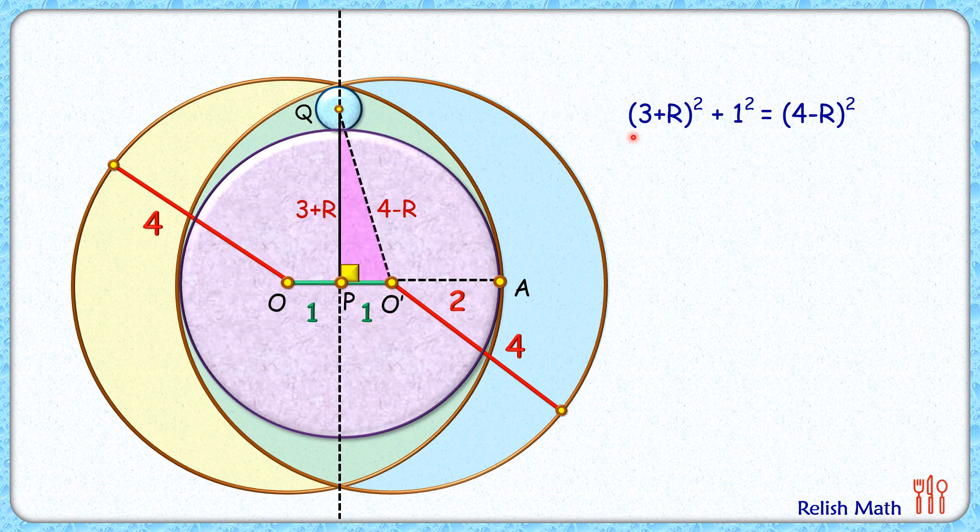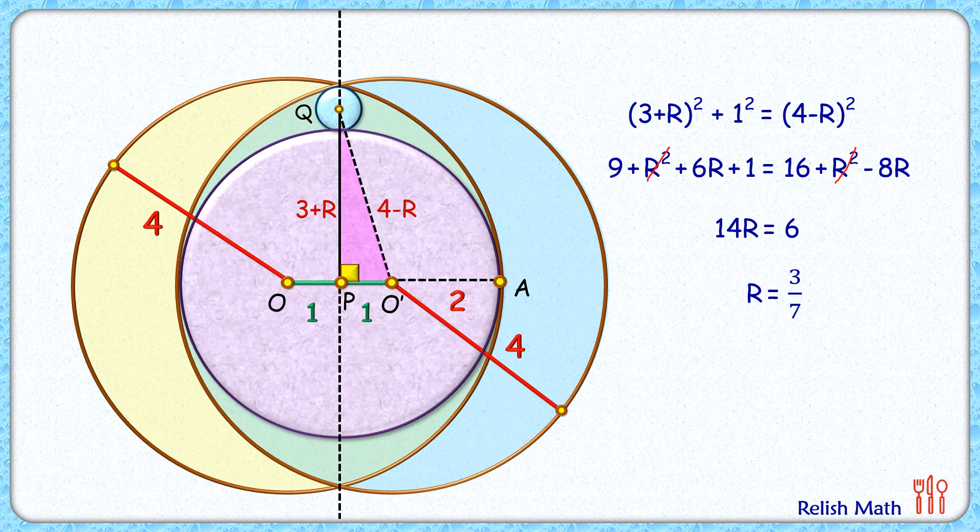Now here, opening the bracket will get an equation in this form. In this, if you observe, LHS and RHS R squared is getting cancelled. Simplifying, it will get 14R is 6, or R is 6 upon 14, which is 3 upon 7 cm. In decimal form, R is 0.43 cm, and that's our answer.